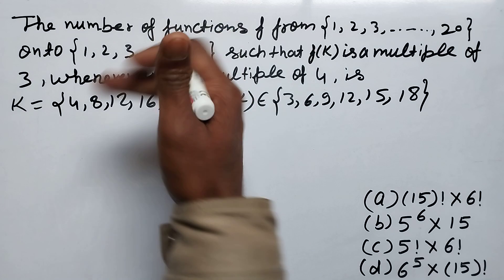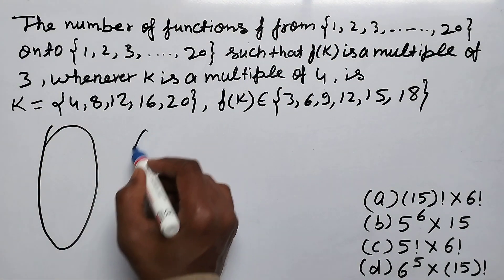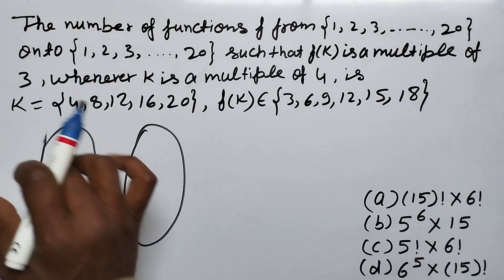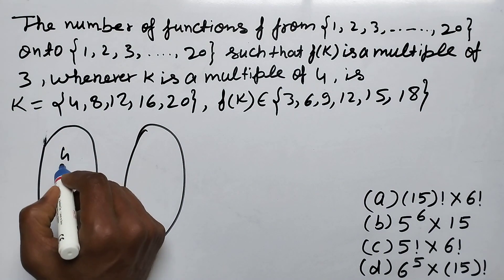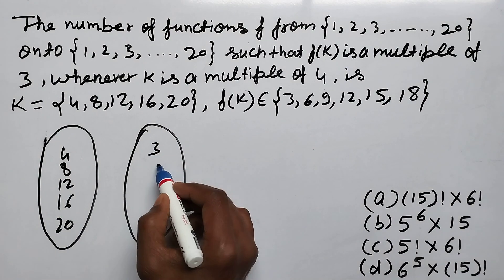Number of onto functions is being asked. These functions from 1 to 20: these are 4, 8, 12, 16, 20,